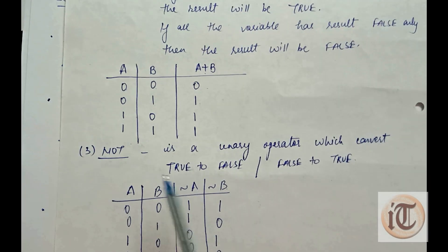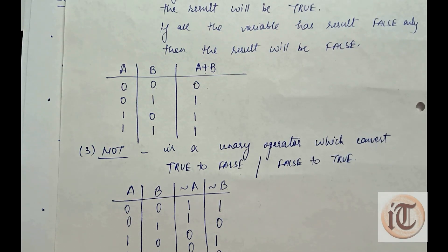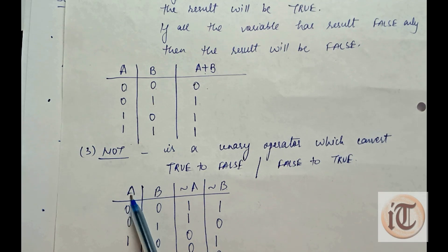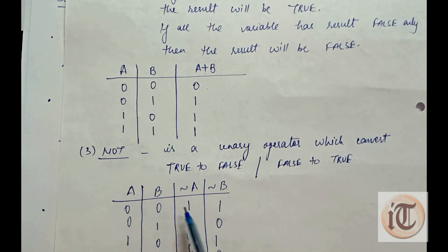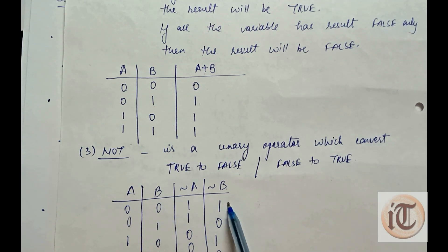For the NOT operation, it is a unary operator which converts true to false and false to true — it is complementary. If the variable contains true, the outcome will be false; and if the input is false, the outcome will be true. For variable a, we denote the NOT of a using the tilde sign. If a is 0, the outcome is 1; if a is 1, the outcome is 0. Similarly for b: if b is 0, the NOT operation gives 1, and for 1 the answer is 0.